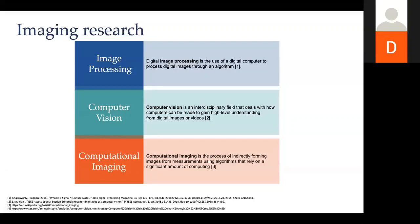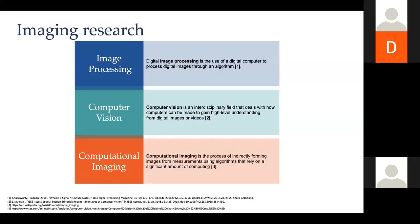The two categories you've heard a lot about are image processing and computer vision. Digital image processing is the use of a digital computer to process images through an algorithm — you have an image that's already been formed and you're trying to make it better, through filtering noise, sharpening edges, and so on. You might recognize some of this from third or fourth year electrical engineering.